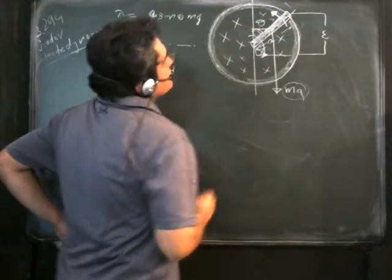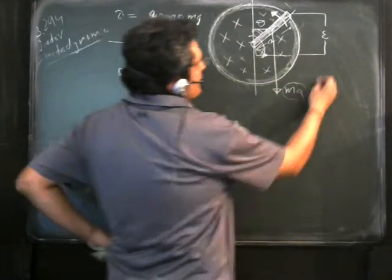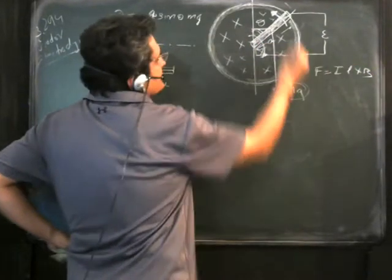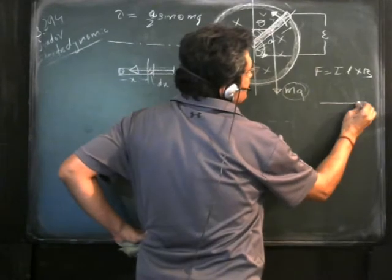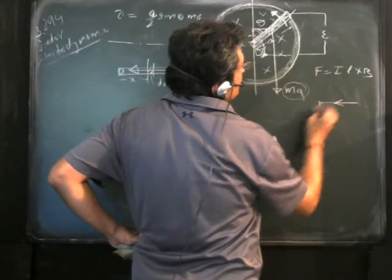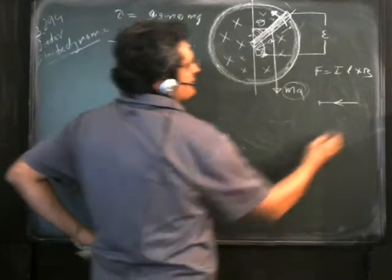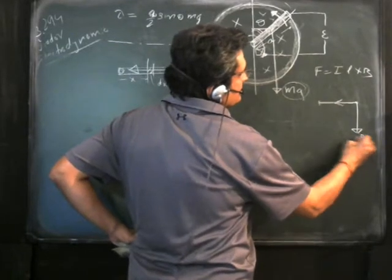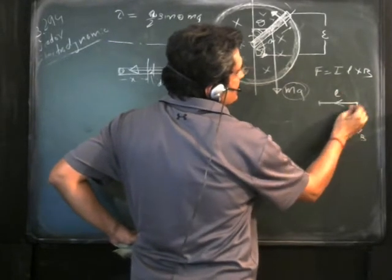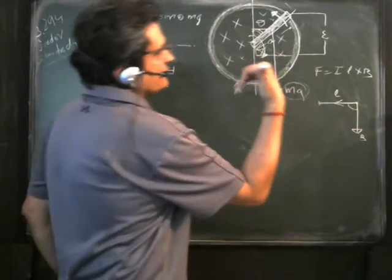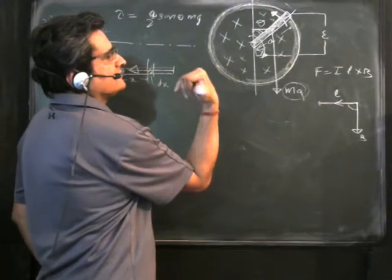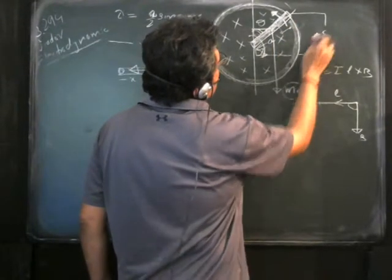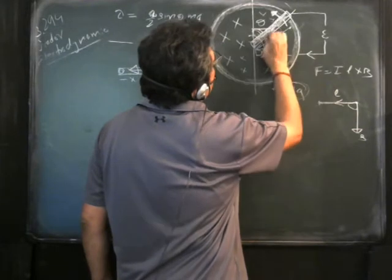The force on an element is F = I·L × B. Taking the side view: if current flows in this direction, then L cross B gives the force in the clockwise direction. So we should provide the source EMF such that current flows in this direction to produce an anti-clockwise torque to counter gravity.